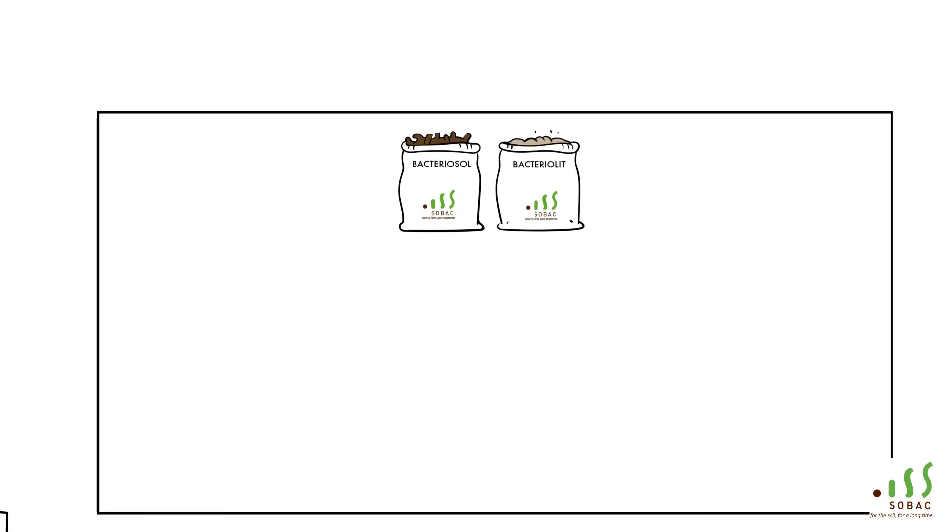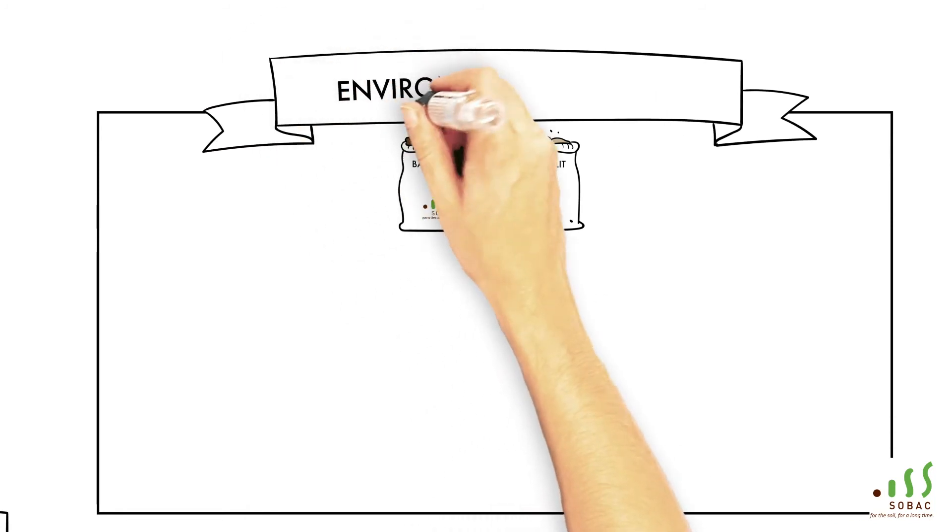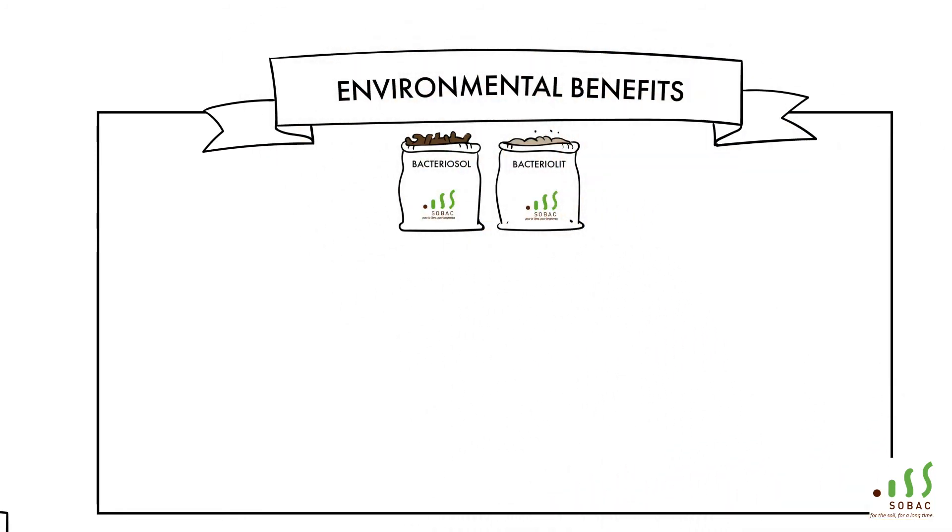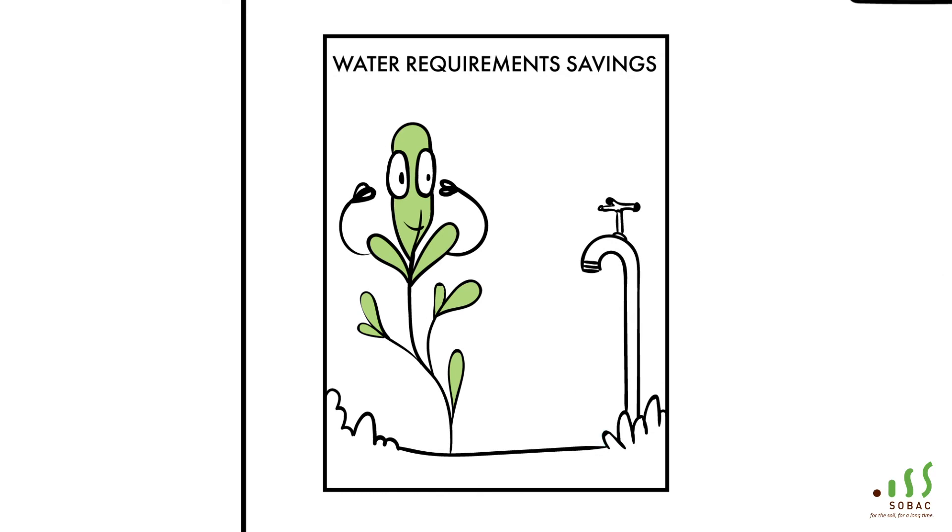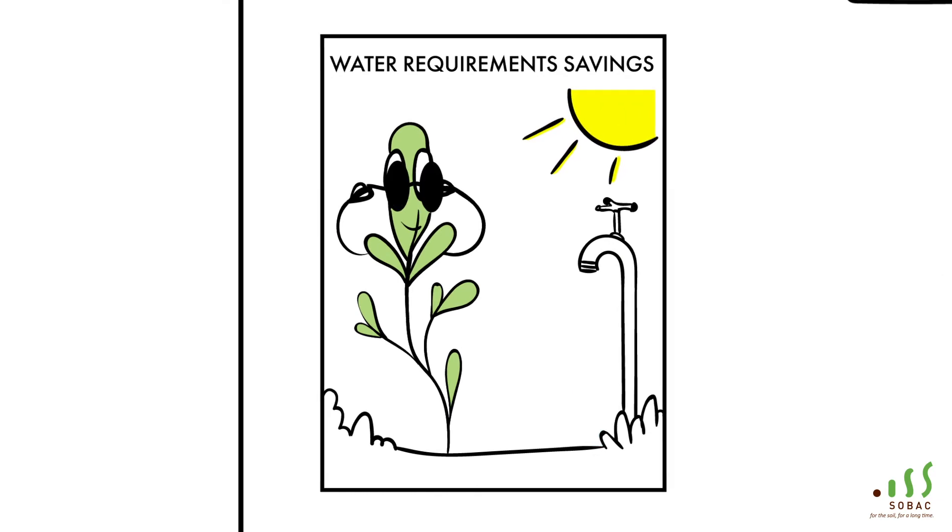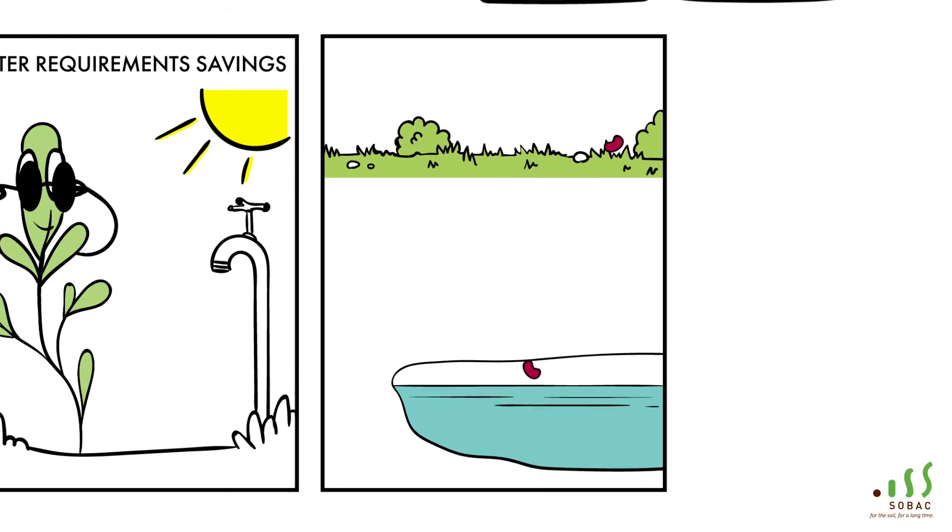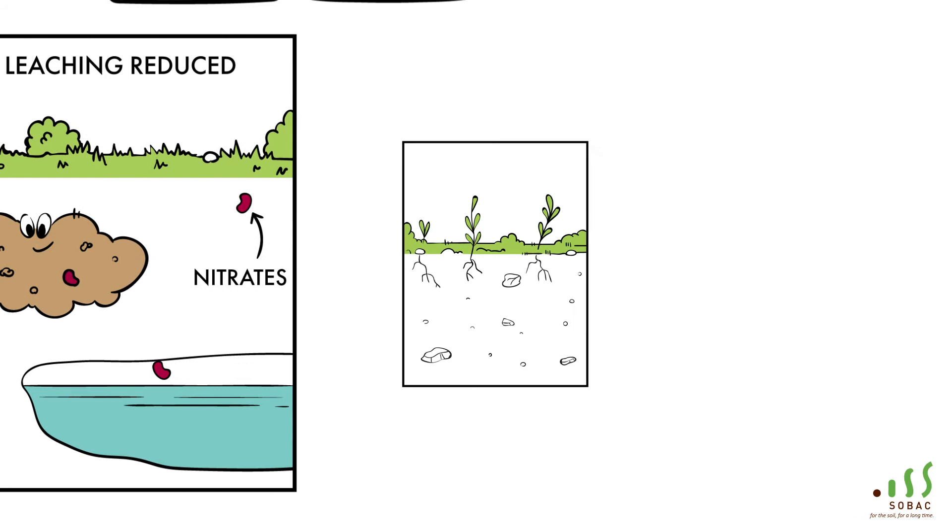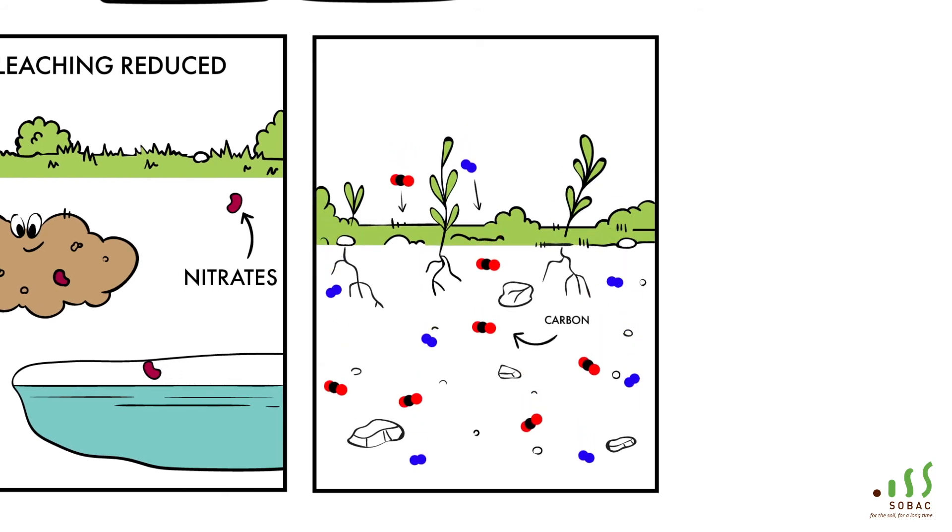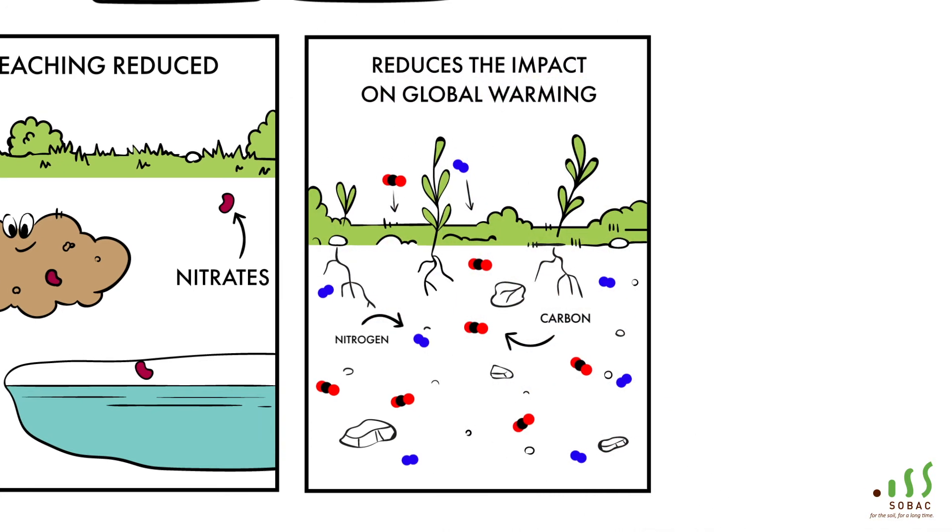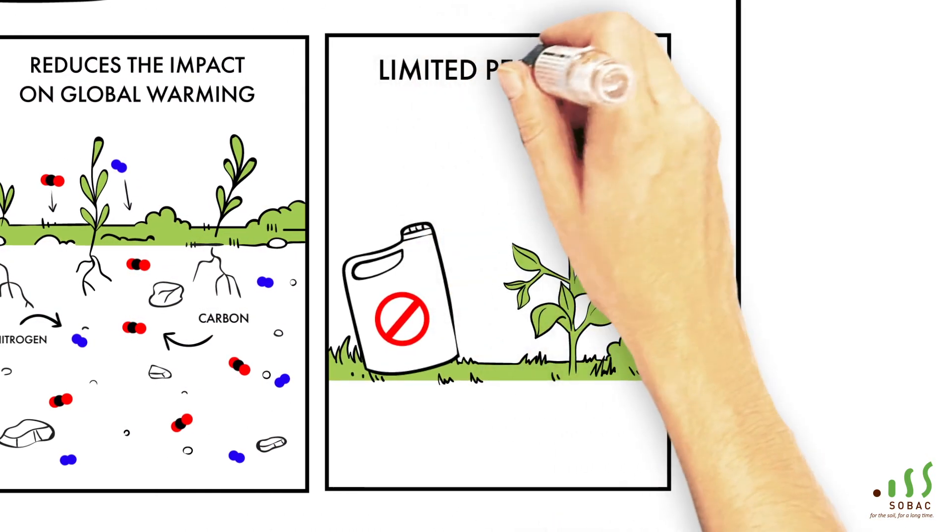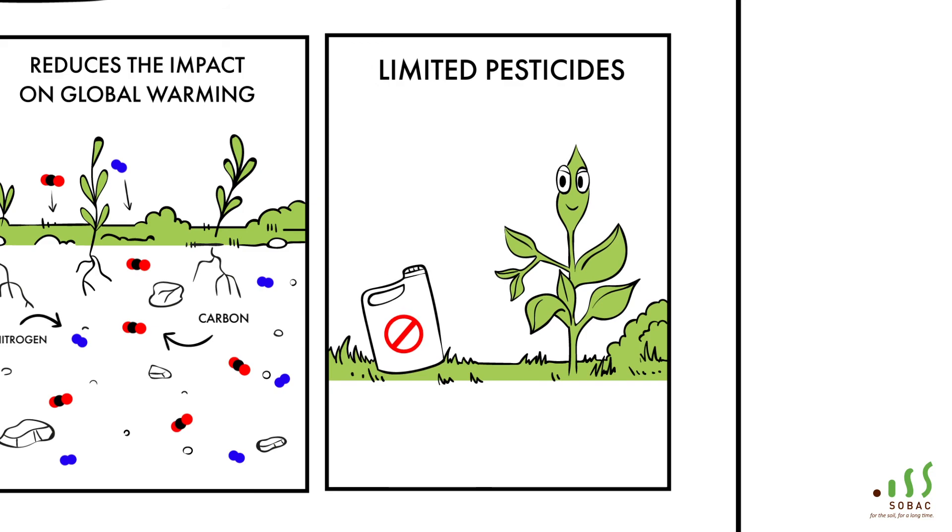Bacteriosol and Bacteriolite also have major environmental benefits. There is significant saving in water requirements, as plants are more drought-resistant. Leaching of contaminating elements such as nitrates is reduced. Storage of carbon and nitrogen in the soil is improved, which reduces the impact on global warming. The use of pesticides is limited, as the plants are more resistant to diseases.